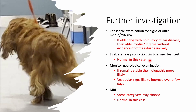We did a Schirmer tear test in this dog, and perhaps surprisingly given the red eye, this was normal. Monitoring the neurological examination is by far the cheapest and most efficient test — if it remains stable, idiopathic disease is likely, and we'd expect the vestibular signs to improve over a few days. Some caregivers will opt for an MRI scan, especially with a more complicated history, and it was normal in this case.